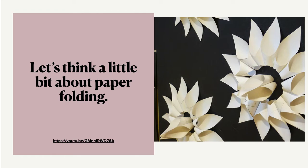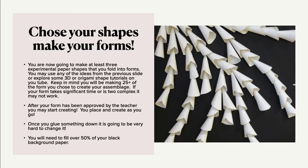First, I want you to think a little bit about paper folding. I have a great video showing you many different varieties of paper folding linked here. You are going to choose your shapes and make your forms — make at least three experimental paper shapes that you fold into forms. You may use any of the ideas from the previous slide or explore 3D or origami shape tutorials on YouTube. Keep in mind that you will be making 25 or more of your chosen form for your assemblage.